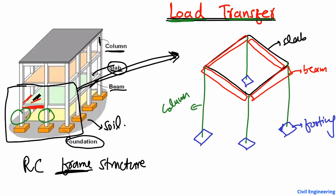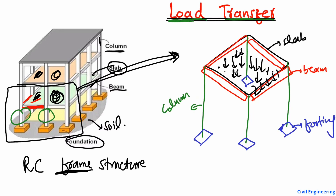Now, how do we transfer the load in our RC members? When load acts on the slab system — for example, people coming onto the slab, furniture load, or any kind of live load — the slab is the main part where the load is coming, the main living space. When the load comes on the slab, it is directly transferred to the beams on the four edges.